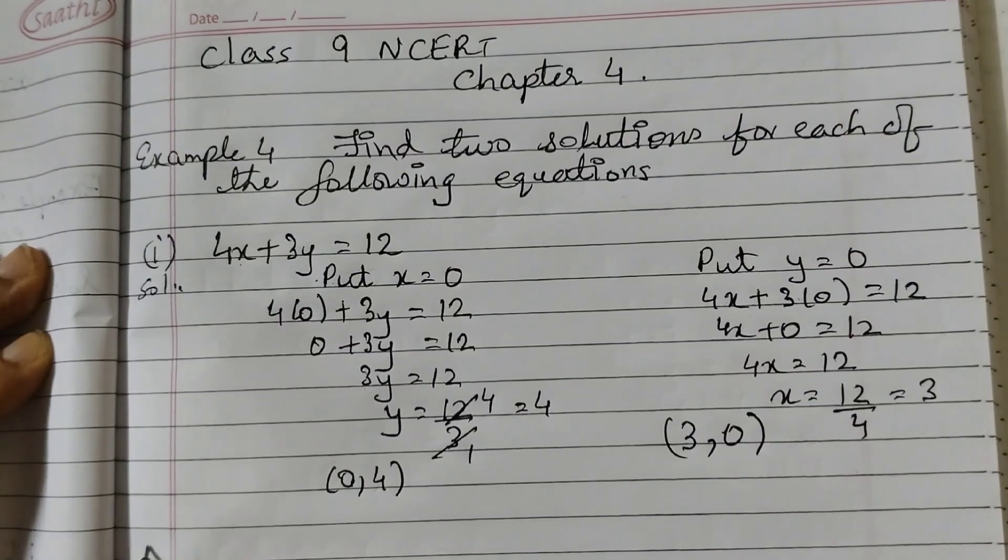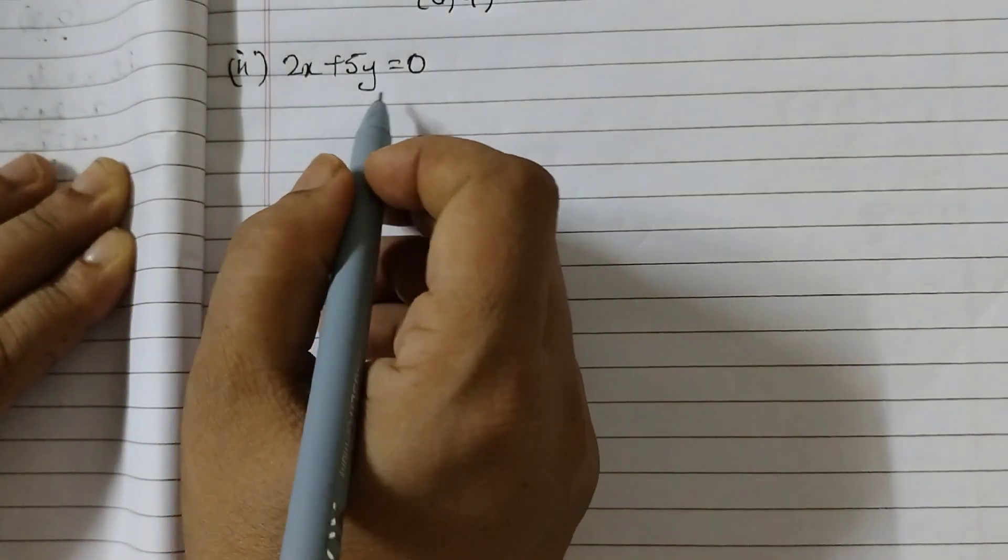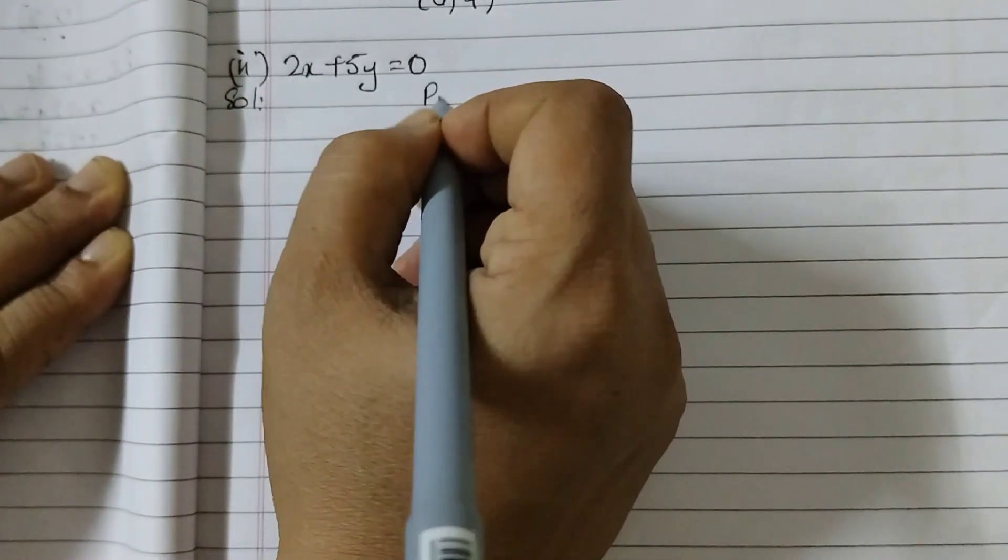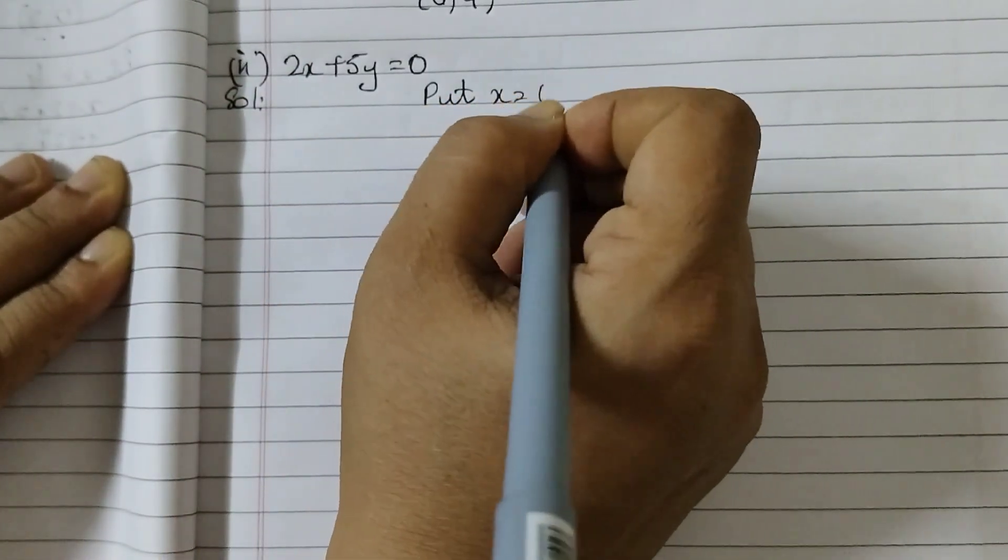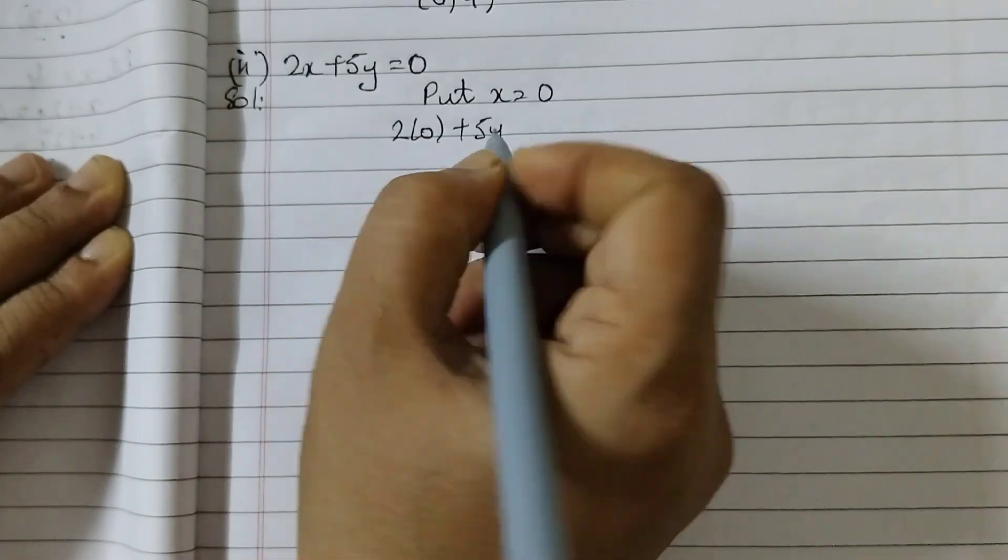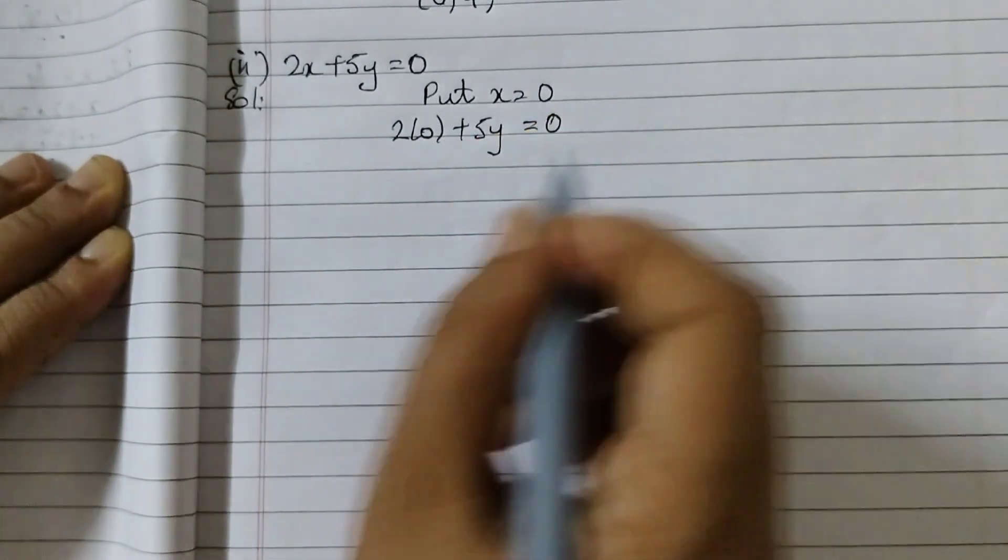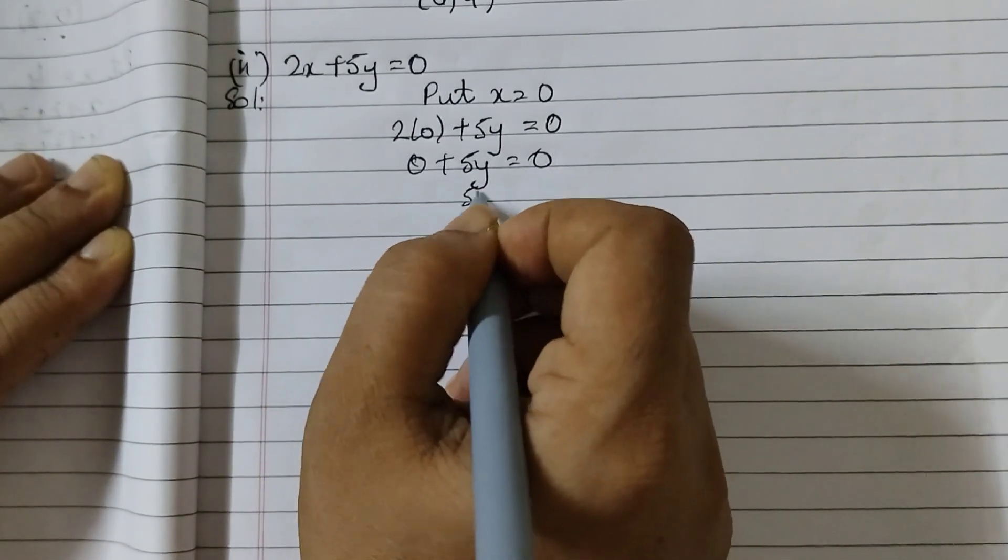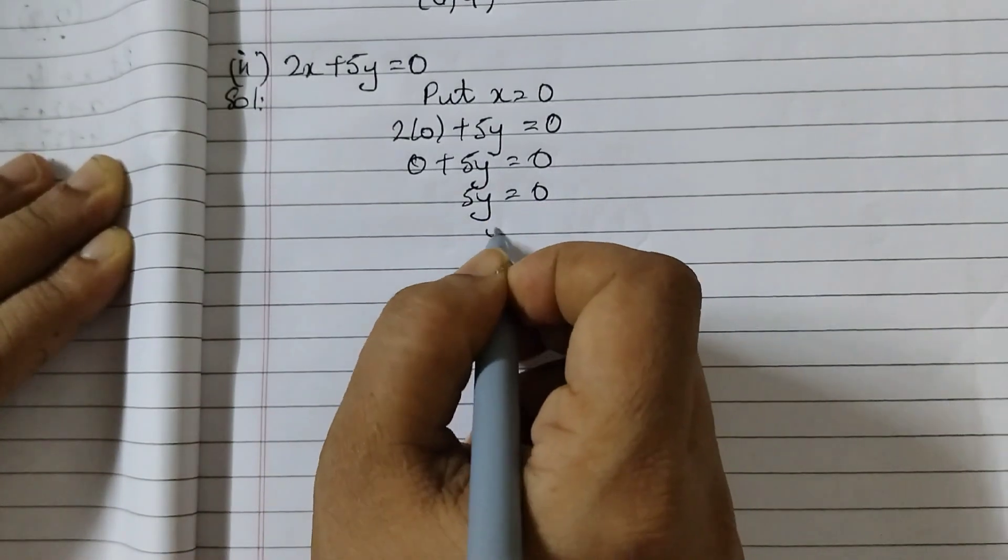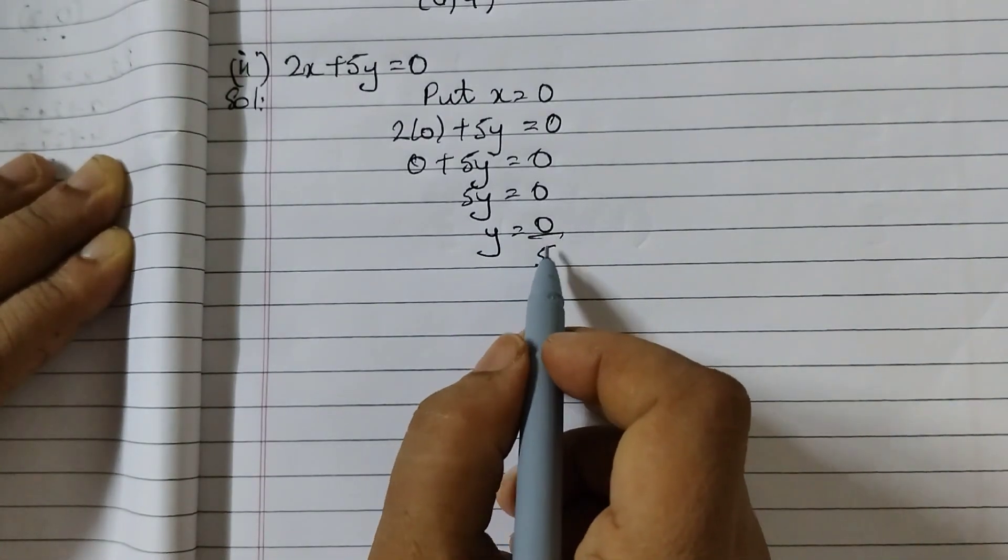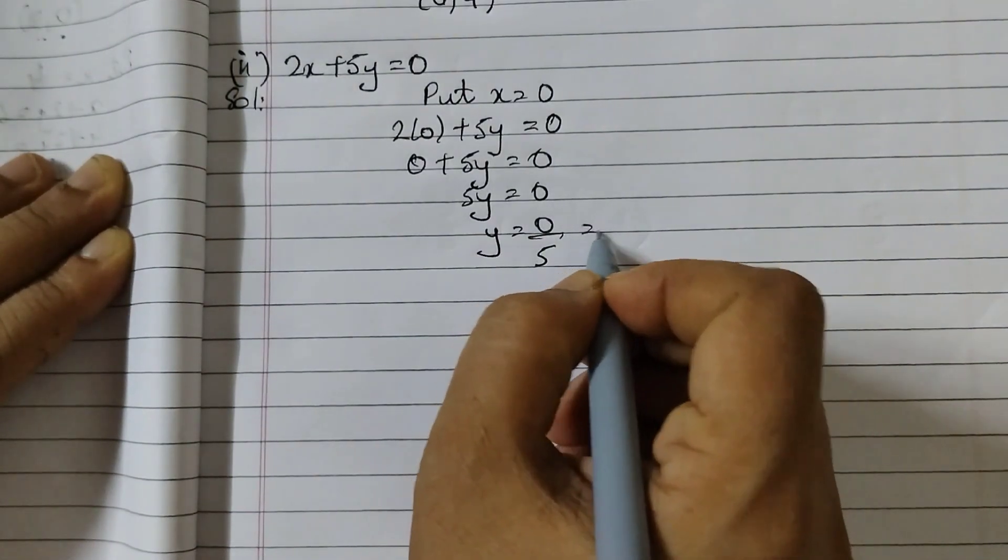Now moving on to the next one. 2x plus 5y is equal to 0. So same way we have to do put x equals to 0. So 2 into 0 plus 5y is equal to 0. 0 plus 5y equals to 0. 5y is equal to 0 or y we can say 0 divided by 5 and 0 divided by any number is 0. So 0.